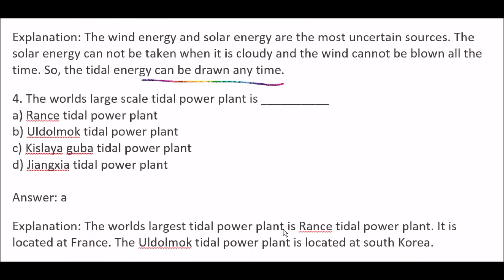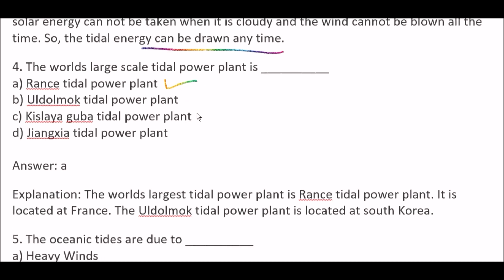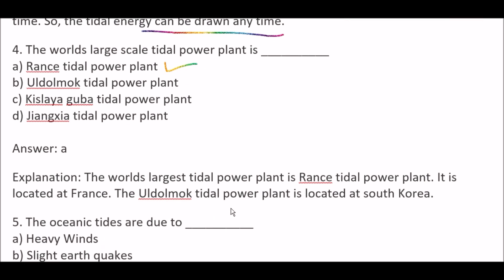Next question: The world's largest-scale tidal power plant is — Option A, Rance tidal power plant; Option B, Uldolmok tidal power plant; Option C, Kislogubskaya tidal power plant; Option D, Jiangxia tidal power plant. Right answer is Option A, Rance tidal power plant. The world's largest tidal power plant is the Rance tidal power plant. The Uldolmok tidal power plant is located in South Korea.